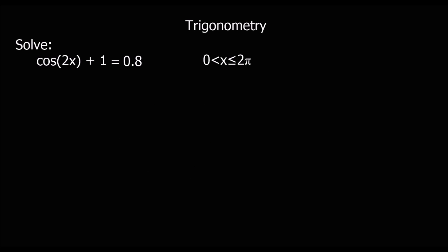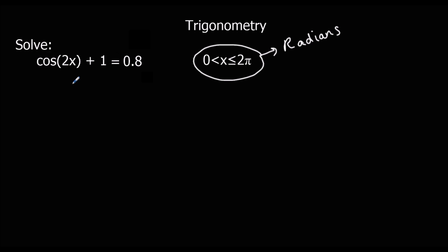Here's another question: solve cos(2x + 1) = 0.8 for x between 0 and 2 pi. It's between 0 and 2 pi, so we're in radians — make sure the calculator is in radians mode. We can't immediately do shift cos because there's also a plus 1 on that side of the equation. So we subtract 1 from both sides first, giving cos 2x = -0.2.